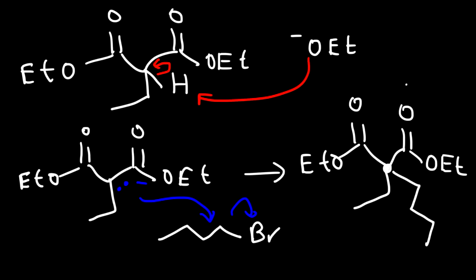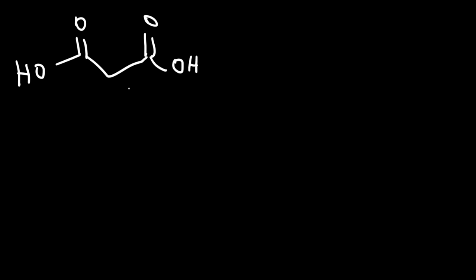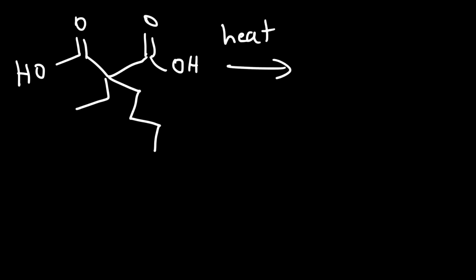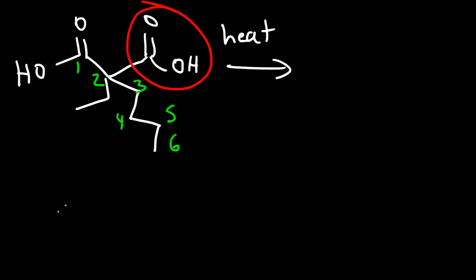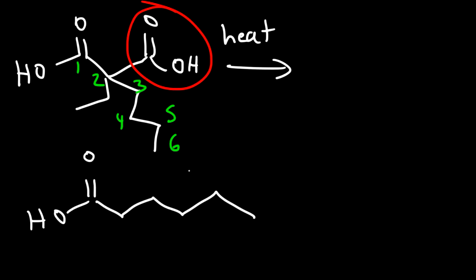Our next step is to react it with H3O+, converting each ester into a carboxylic acid. Then finally, we're going to heat the solution and decarboxylation will occur. Counting the longest chain: one, two, three, four, five, six — so we have hexanoic acid again. And on the second carbon, the alpha carbon, we have an ethyl group sticking out of it. So this is the product for this reaction.